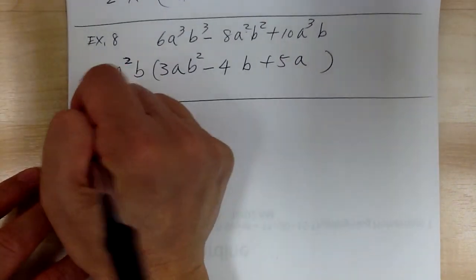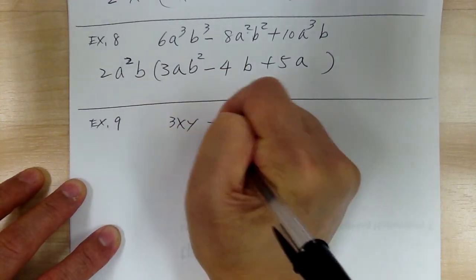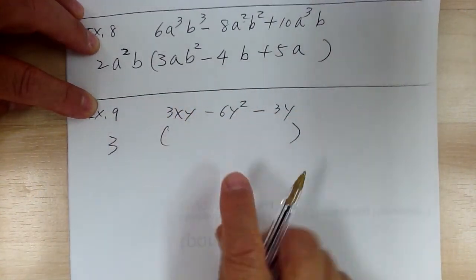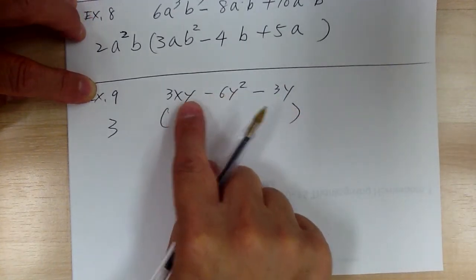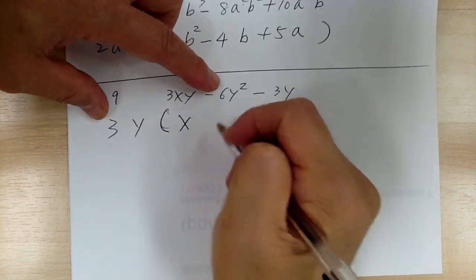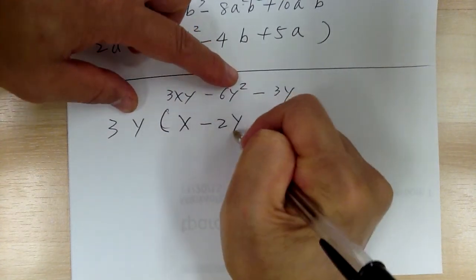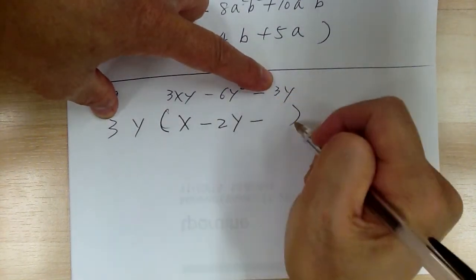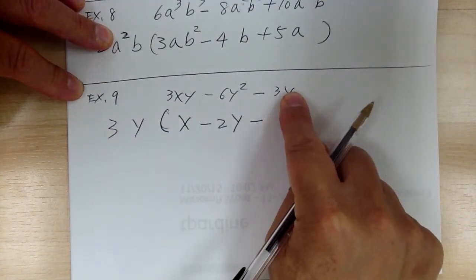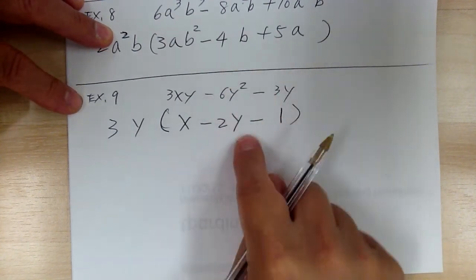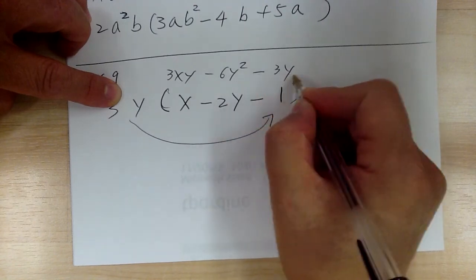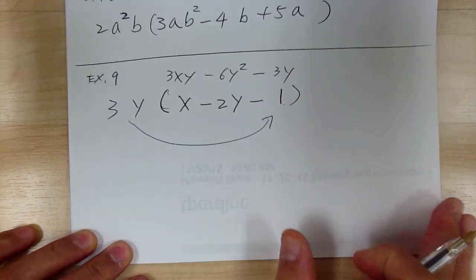Example 9: 3xy minus 6y² minus 3y. Numbers 3, 6, and 3 — factor out 3. For variables: no x in all terms, so you can't factor x. You've got y, y², and y — factor out y. So GCF is 3y. Leftover: 3y needs x, so first term is x. Second is minus 2y, because y times y gives y². Third: everything is already accounted for, so you write 1 — don't leave a blank, because 3y times 1 gives 3y. The answer is 3y(x − 2y − 1). Now let's go ahead and do practice.